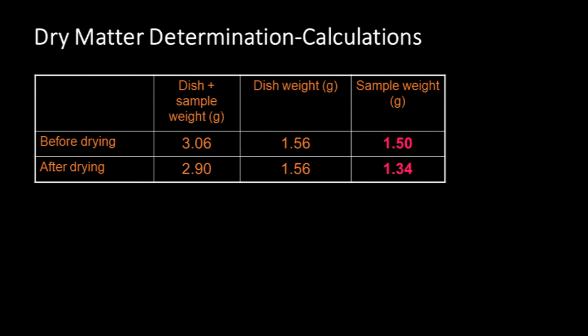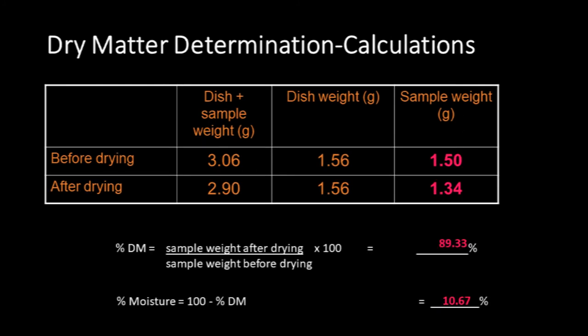Now calculate the percentage of dry matter. It is the sample weight after drying divided by sample weight before drying and multiplied by 100. So the answer is 89.33 percent. For the calculation of moisture content, simply subtract this value from 100. So 100 minus percent dry matter equals the amount of moisture, that is 10.67 percent.